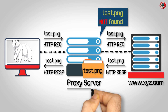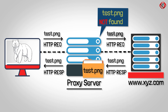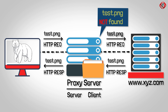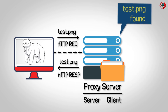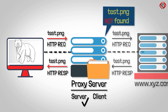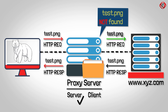Therefore, a proxy server acts as both a server and a client. A server is a device which provides data and a client is a device which requests data. When the proxy server receives requests from a browser and sends back responses, it functions as a server. When it sends the request to an original server and receives responses, it acts as a client.